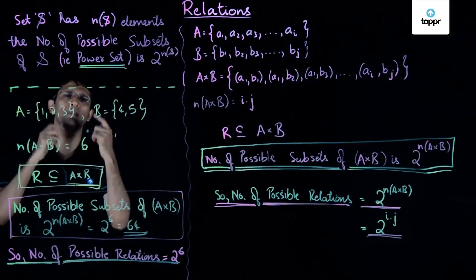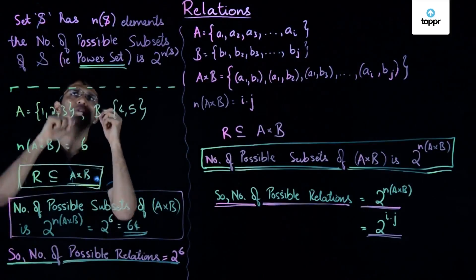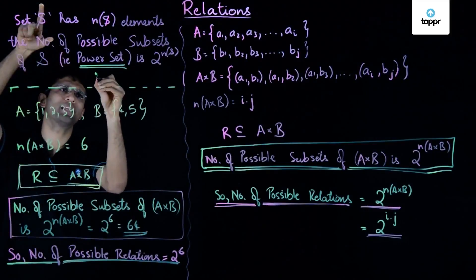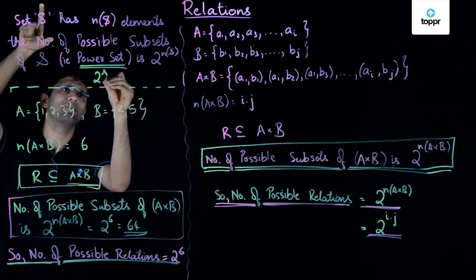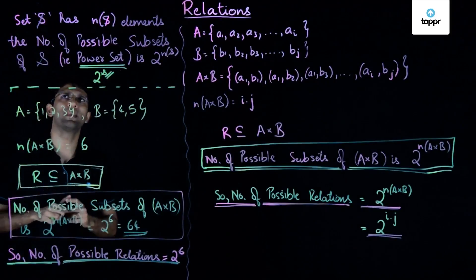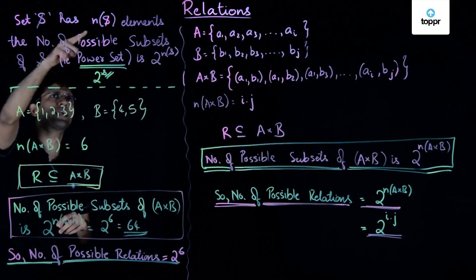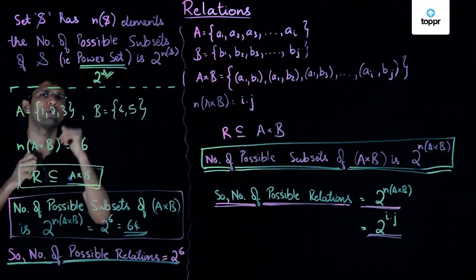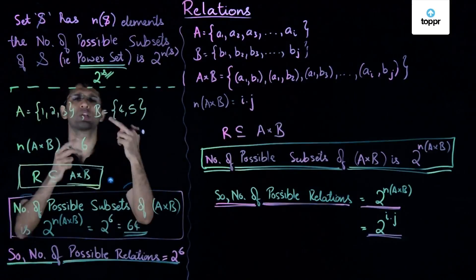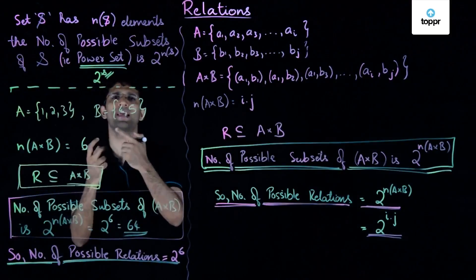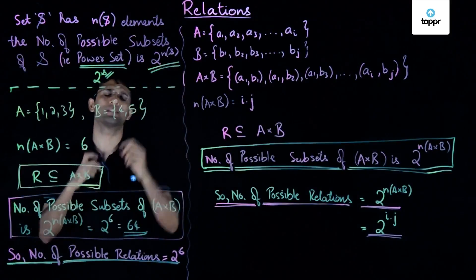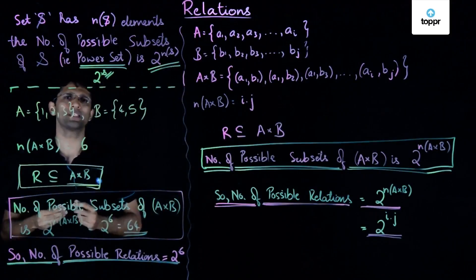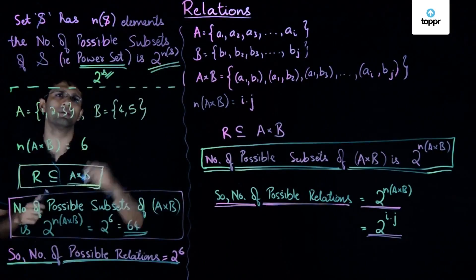This is also denoted by the power set. If we have a set S, the power set is denoted by 2 to the power S, where S is the name of the set. When S has cardinality n(S), the number of possible subsets of S is equal to 2 raised to n(S). This is an important result that we will borrow here.